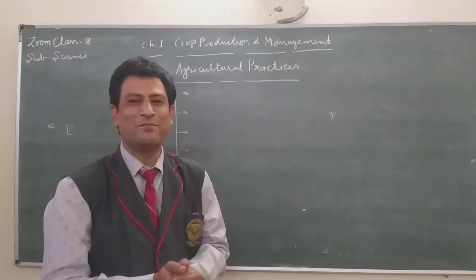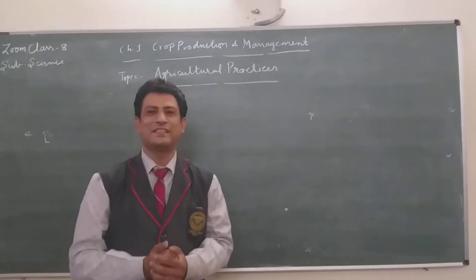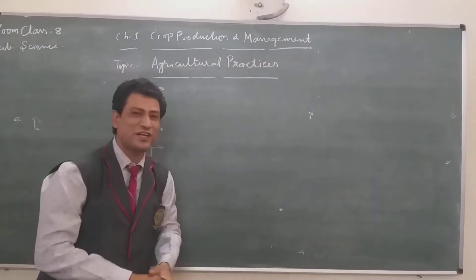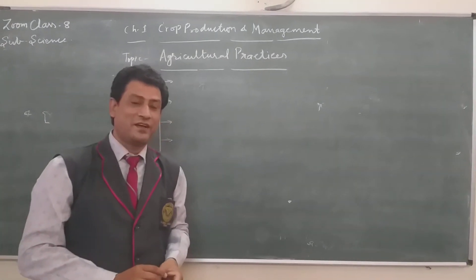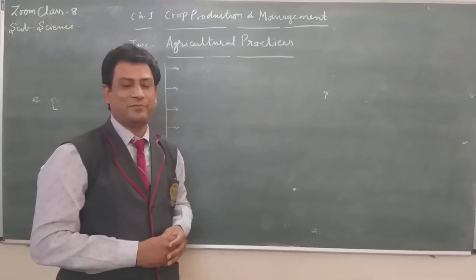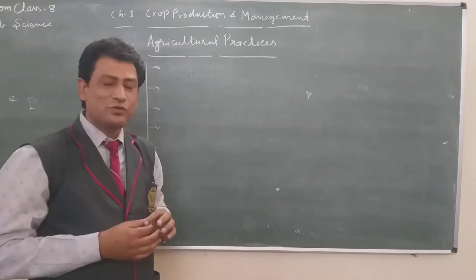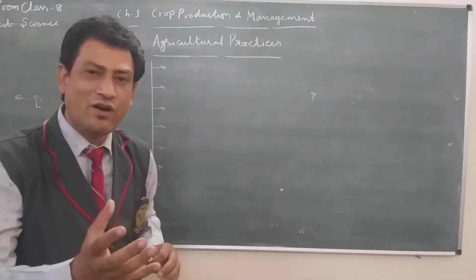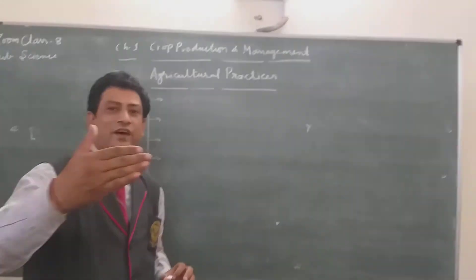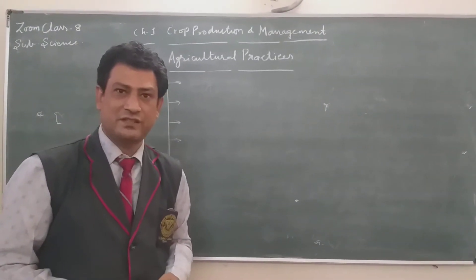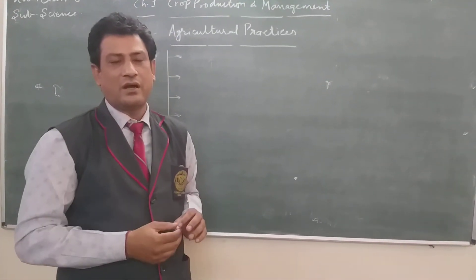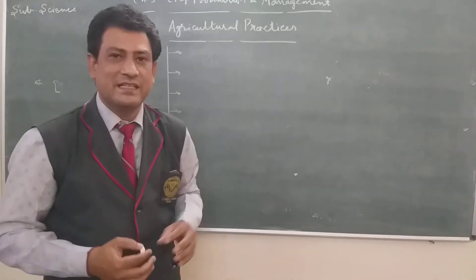Hello students, I welcome all of you in our science class. As you know, we are studying chapter number 1, Crop Production and Management. Today's topic which I am going to explain is Agricultural Practices. First of all, you should know the meaning of Agricultural Practices — it means the step-wise functions which take place in the agricultural field to produce food substances from the crop.